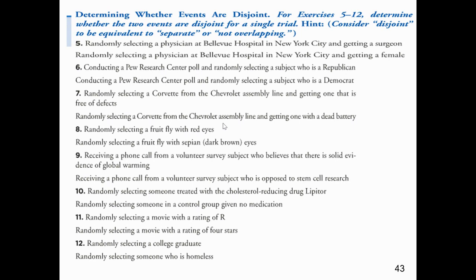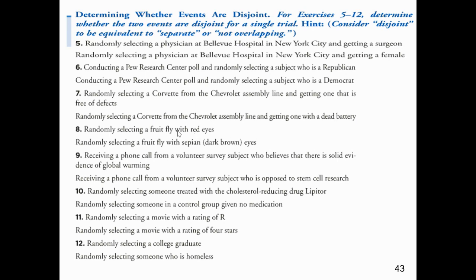A fruit fly with red eyes versus one with dark brown eyes — a fruit fly can't have both at the same time, so those are disjoint. A survey subject who believes in solid evidence for global warming versus one opposed to stem cell research — there could be overlap, so not disjoint. Selecting someone treated with cholesterol-reducing drug Lipitor versus someone in a control group taking no medication — since Lipitor is a medication, these would have overlap.